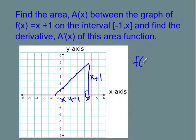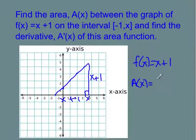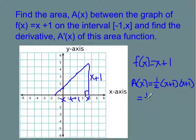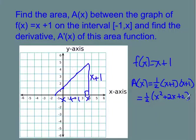So I'm starting with a function f of x equal to x plus 1. Now I'm going to find out what the area function is. This is the area of a triangle, so I'm going to take one half. The base is x plus 1 and the height is x plus 1. That's going to simplify to one half times x squared plus 2x plus 1, which distributes out to one half x squared plus x plus one half.